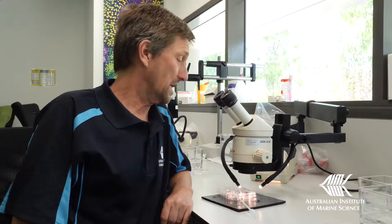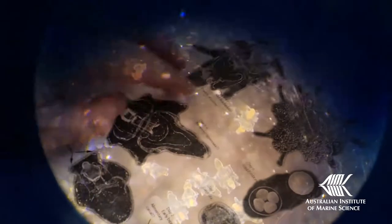We've just raised a whole lot of crown-of-thorns sea star larvae. I have about 500 here in the dish, and overall we might have 10,000 at AIMS at the moment.